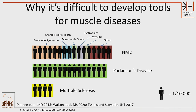But why is it difficult to develop tools for muscle diseases? AI is all the rage right now — we want AI tools to segment, analyze, and classify. But neuromuscular diseases are each individually very rare. If you take them collectively, they actually have quite a good prevalence, even more than Parkinson's and multiple sclerosis. But each disease is different, and having an AI tool to address each disease separately — to identify each disease — is more complicated.